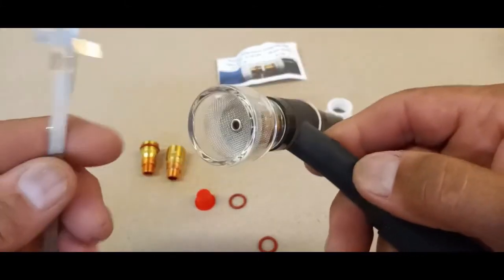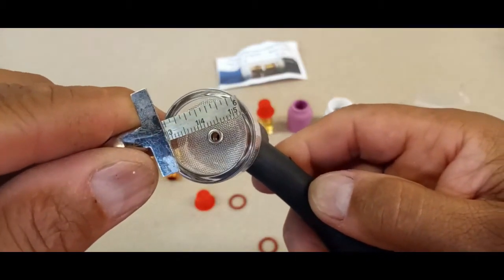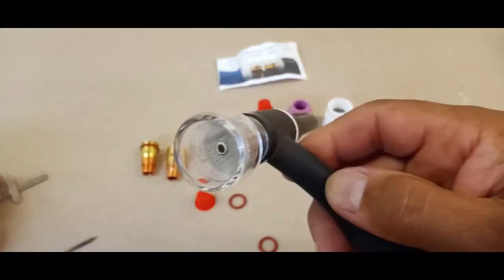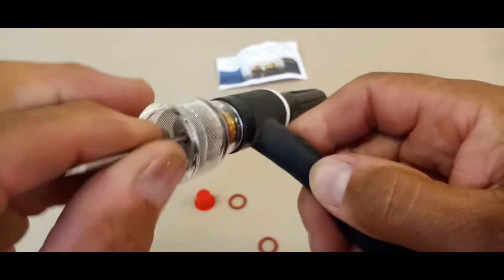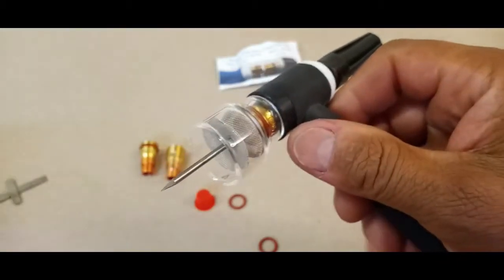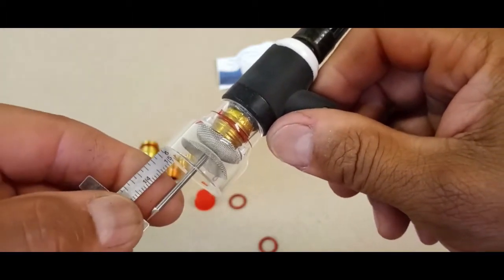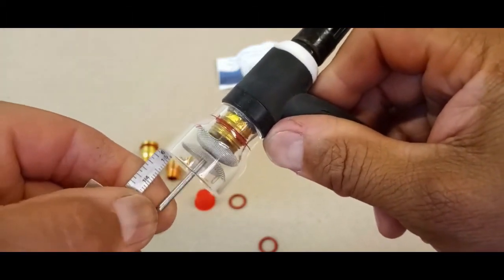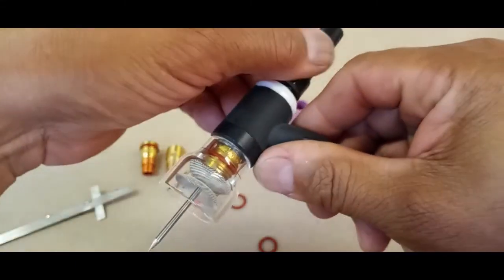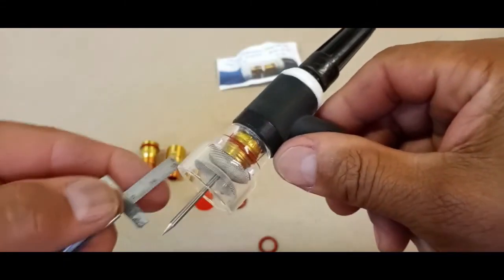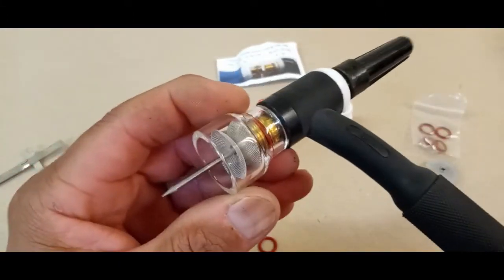Now how to set tungsten stick out. How far should the tungsten stick out of the cup? The width of the cup is your maximum tungsten stick out. That's across the board, it works with any cup. That's the proper way you set tungsten stick out. We're going to tighten that down and double check. That's it, you're ready to go.